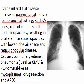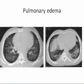Causes of acute interstitial disease include PCP, cytomegalovirus, mycoplasm, drug reaction, and ARDS. The appearance of pulmonary edema is seen in the peripheral and basal regions with bilateral ground glass appearance.